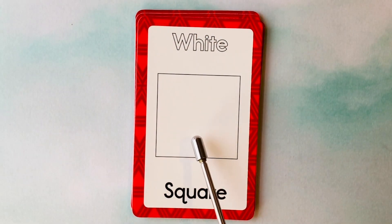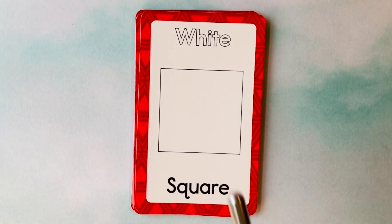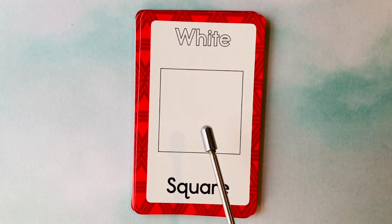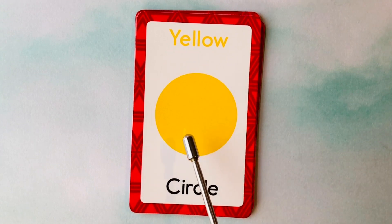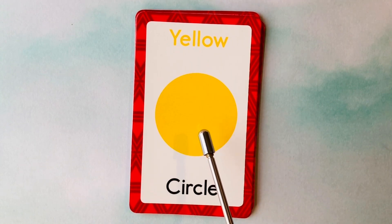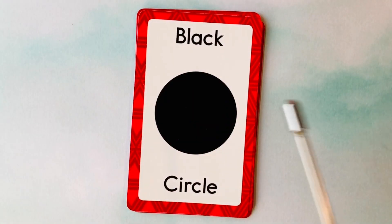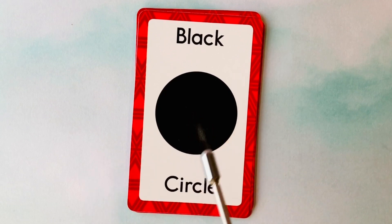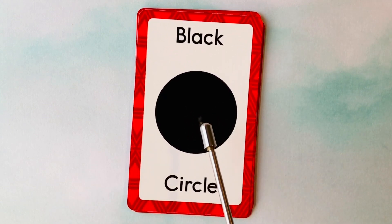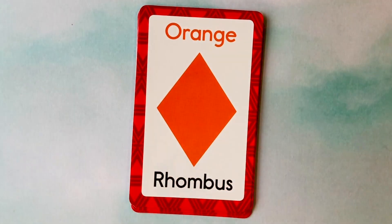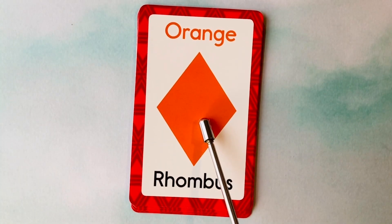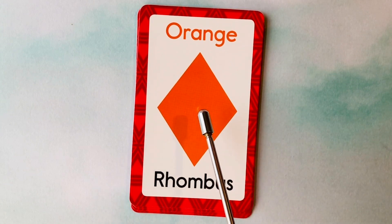This is a square. What color is this square? It's a white square. This is a circle. What color is this circle? It's a yellow circle. This is also a circle. What color is this circle? It's a black circle. This is a rhombus. What color is this rhombus? It's an orange rhombus.